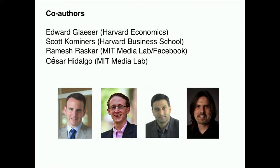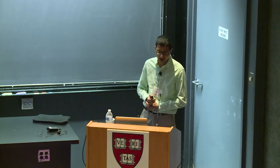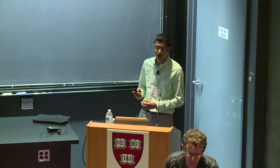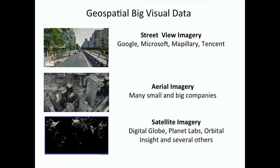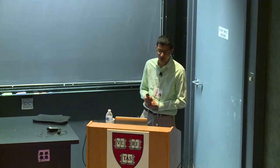Before getting to the work itself, I want to give you a general sense of what this field is enabling us to do. In the past decade there has been a boom in geospatial big visual data — a lot of data available online about the built environment and our physical world. This imagery has been captured at the street level, from airplanes, drones, and satellites. Street view imagery is captured by vehicles driving around streets, available for countries worldwide from companies like Google, Microsoft, and Tencent. There is also aerial imagery and satellite imagery, which started with government weather satellites but now includes private companies using low-cost sensors for high resolution coverage.